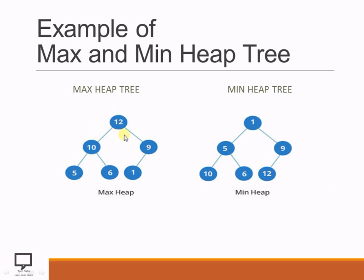In this way we can identify which is a min heap tree and which is a max heap tree. You need to keep in mind that every parent node should satisfy the property: in a max heap, the parent node should be greater than its children; in a min heap, the parent node should be less than its children. Only if these properties are followed can we say the tree is a max heap or a min heap.